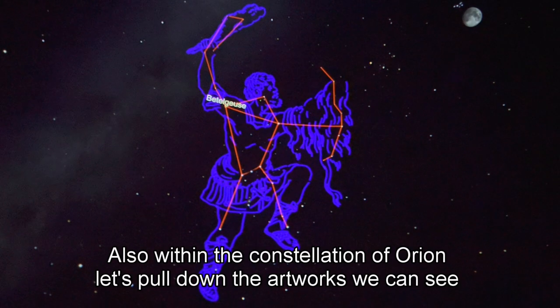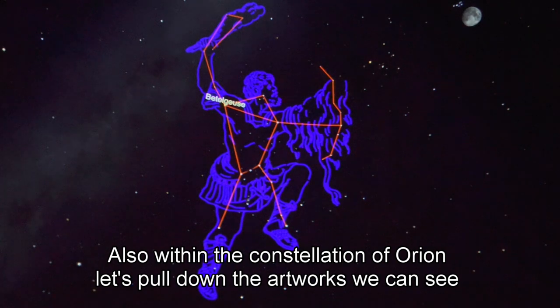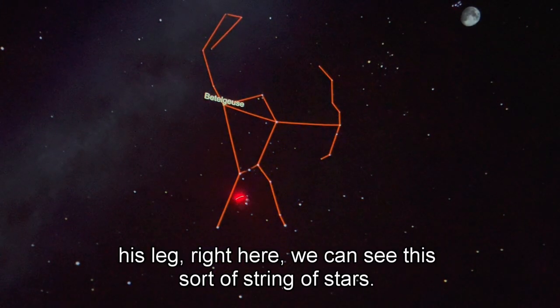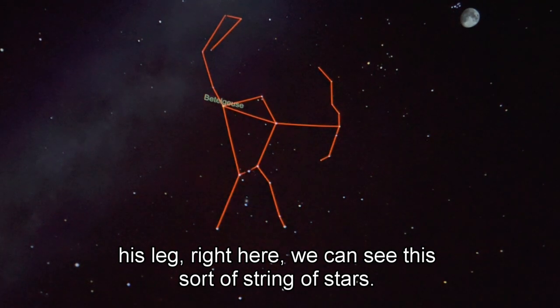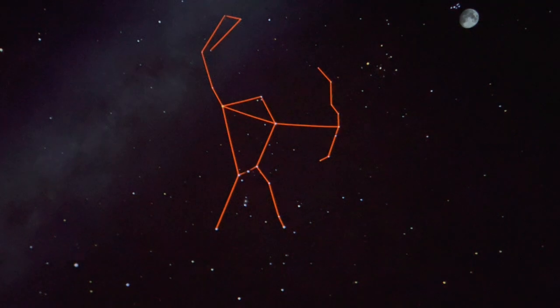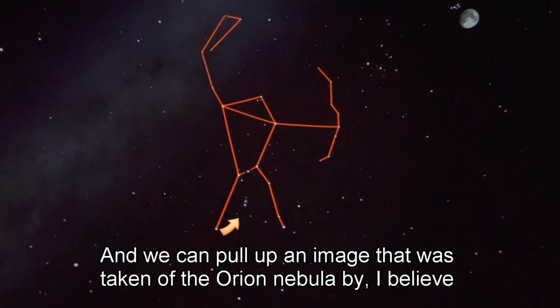Also within the constellation of Orion, let's pull down the artwork so we can see this a little bit better. Right next to his leg, right here, we can see this sort of string of stars. This is the Orion Nebula, and we can pull up an image that was taken of the Orion Nebula by, I believe this one is from the Hubble Space Telescope.